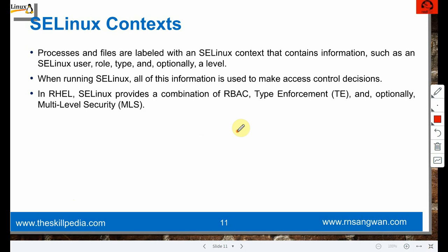Context: processes and files are labeled with an SELinux context containing information such as SELinux user, role, type, and optionally a level - note that level is optional. When running SELinux, all of this information is used to make access control decisions.